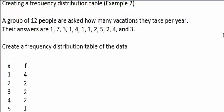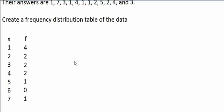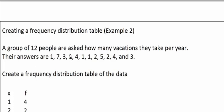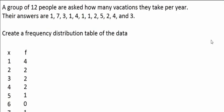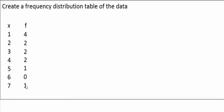Now let's look at one more example. The lowest value is one and the highest number that appeared is seven, which means our x column is going to go from one to seven. Then we move down the x column and count the number of times each value appears in the data set. Counting the ones: one, two, three, four — so one has a frequency of four. Counting the twos: one, two — so two has a frequency of two. I just keep doing this all the way down until I reach seven, and then it's finished.